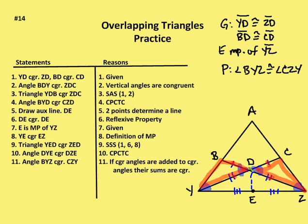Now I can say that angle BYD is congruent to angle CZD by CPCTC. I'm going to draw an auxiliary line DE — two points determine a line. I need this line in order to prove that I have two congruent triangles in YED and ZED. DE is congruent to itself, E is the midpoint of YZ (given), and YE is congruent to EZ by definition of a midpoint.